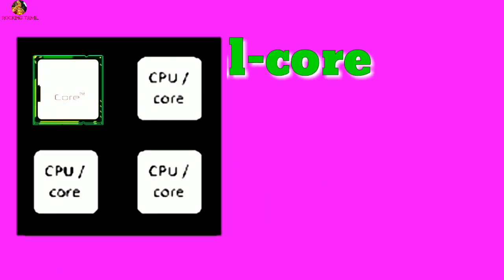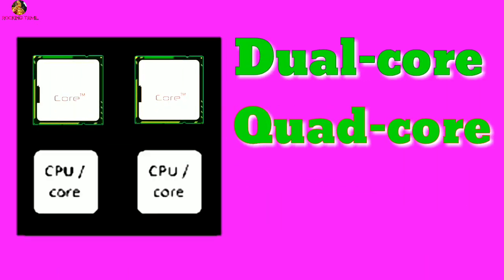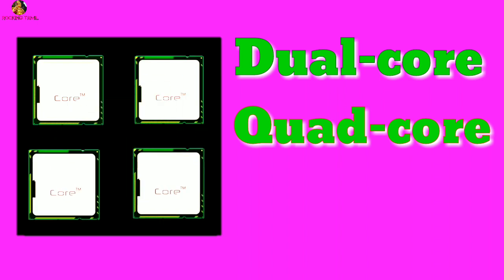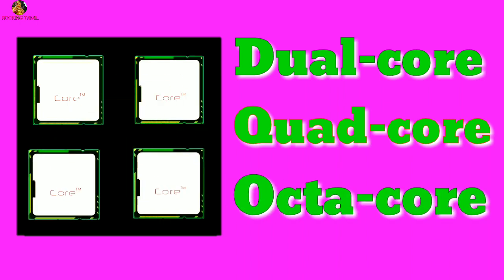You have a processor in dual core — 2 inputs. You have a processor with 4 inputs. You have a processor in octa core — 8 inputs. So, the processor is faster when you have more small unit inputs.